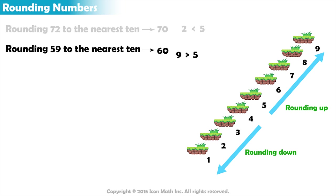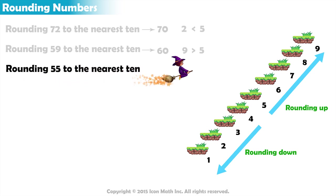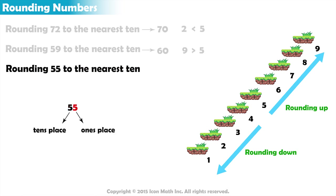Let's round now: 55 to the nearest 10. We have 5 in the tens place and 5 in the ones place. Since 5 is equal to 5, we round up to get 60.